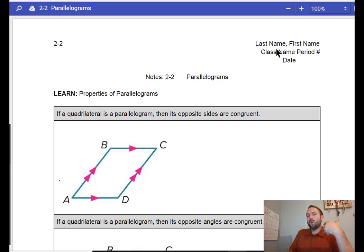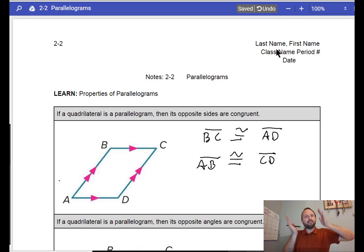So, if a quadrilateral is a parallelogram, then the opposite sides are congruent. What does this mean? Well, we know that BC is parallel to AD, but this is stating, hey, they're also congruent. And we know that AB is parallel to CD, but this is stating they are also congruent. So, not only are they parallel, they're also congruent. They have the same value in length.